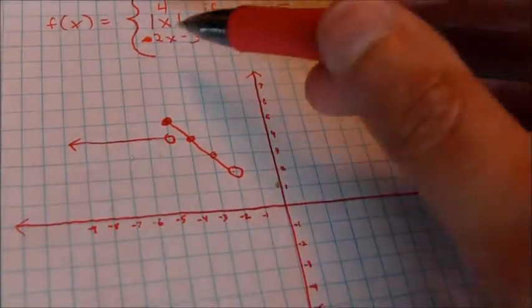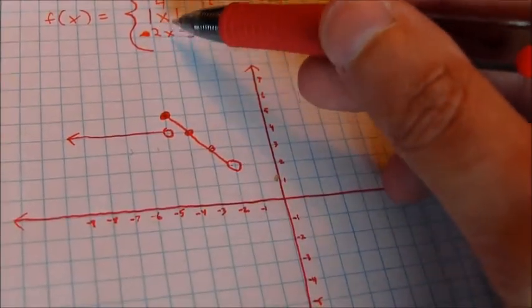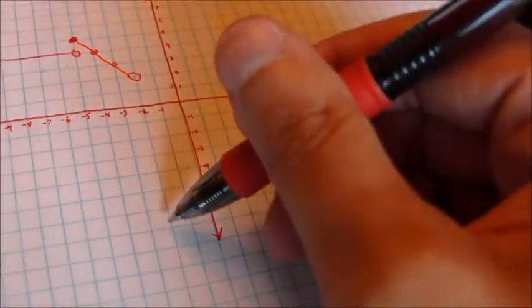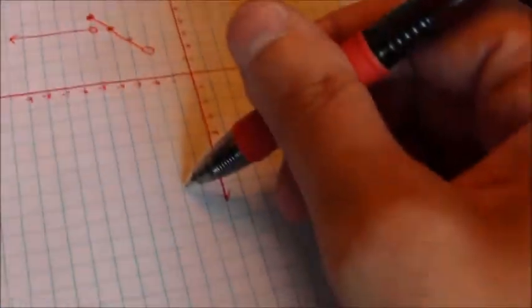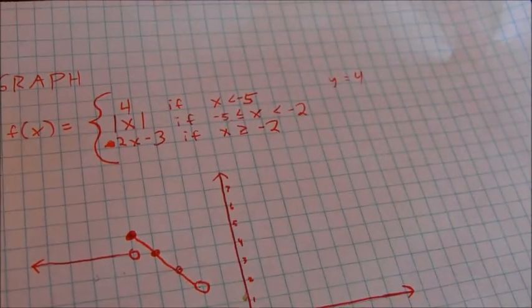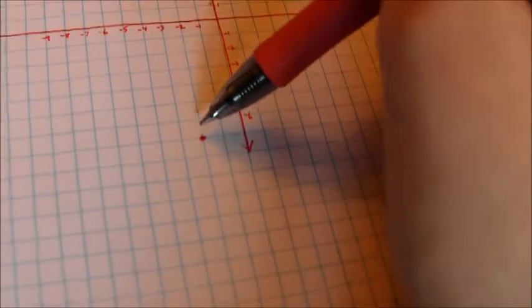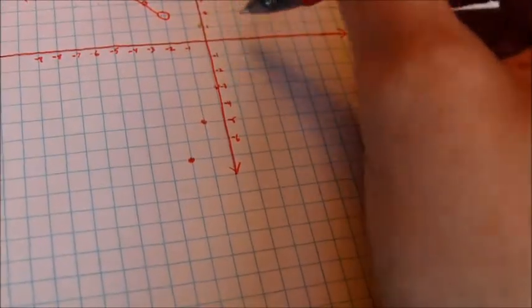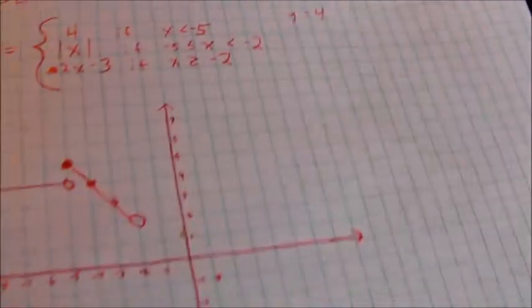Starting when x is equal to negative 2, this is my function. 2 times negative 2 minus 3 is negative 7. So that's going to come down here at negative 7. And it can be equal to that value at negative 2. So we're starting out at negative 7. And you can plot more points. Notice that the slope is just 2 there. So I could also just continue that slope, go up 2 over 1, up 2 over 1.